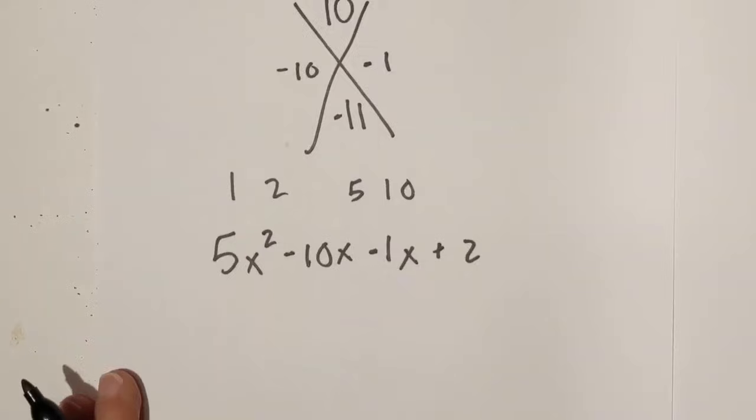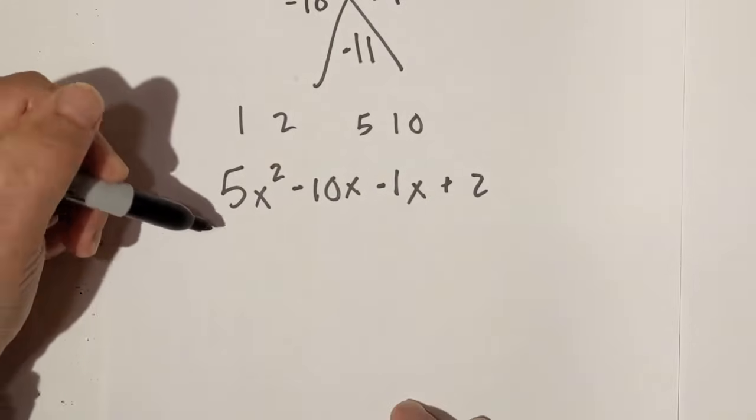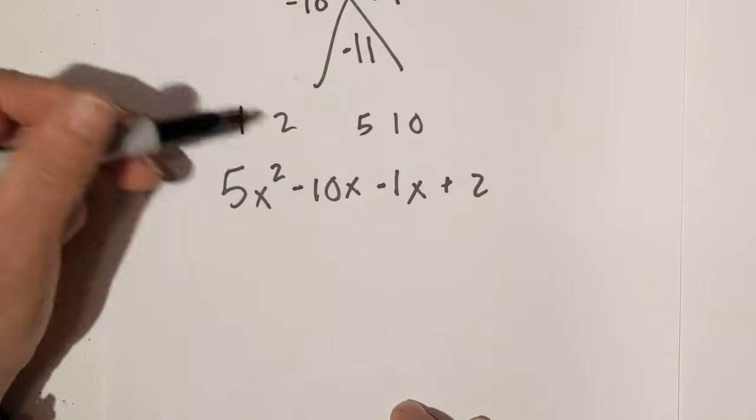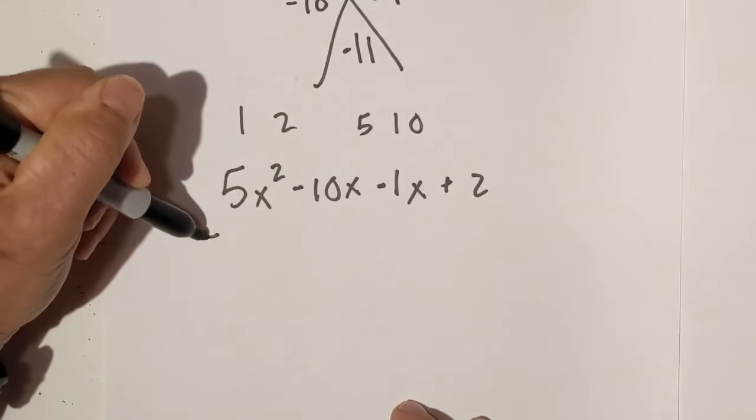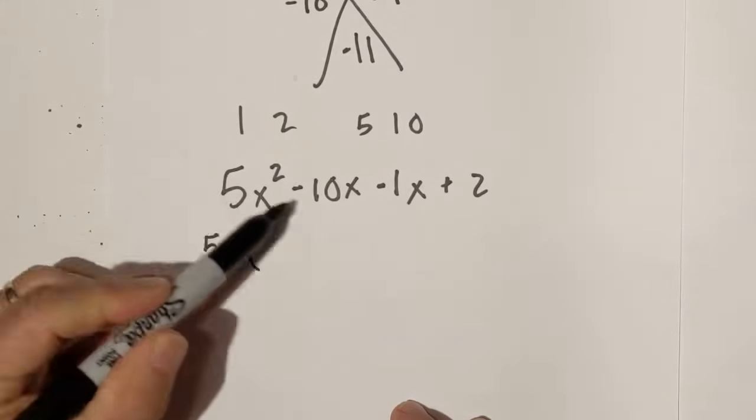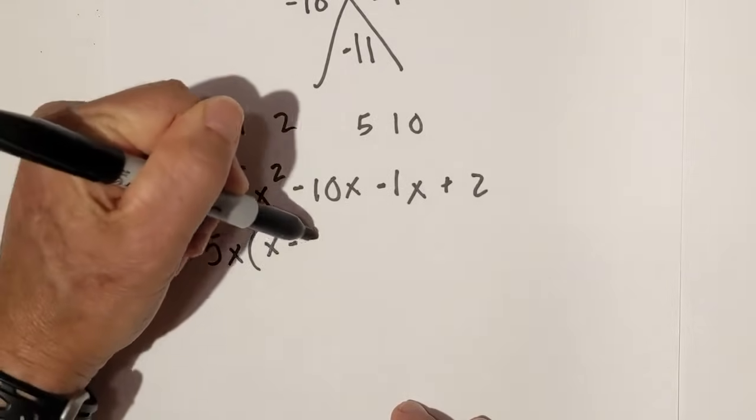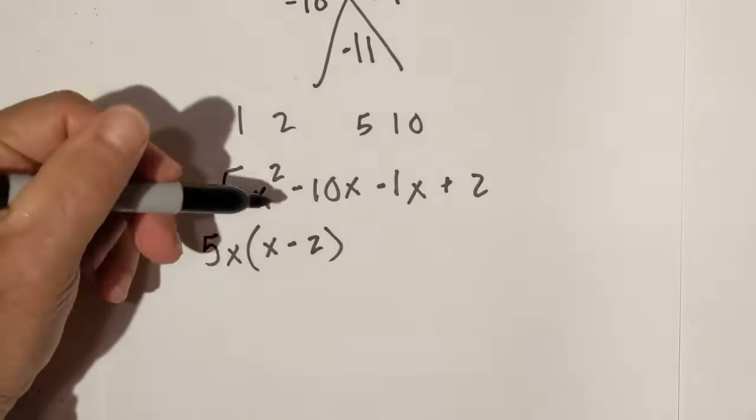Now we factor by grouping. Bring out the greatest common factor. Here it looks like we have 5 and 10—5 goes into 10—and then we have x and x, so it looks like it's going to be 5x. When you take out the 5x, that leaves us x minus 2.